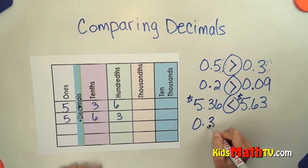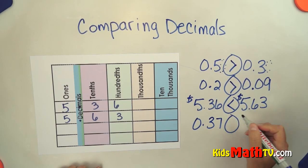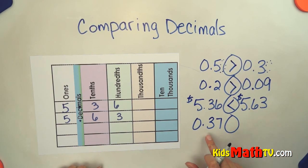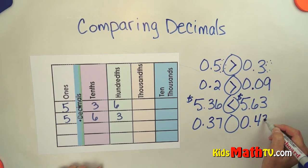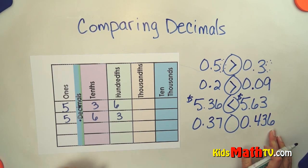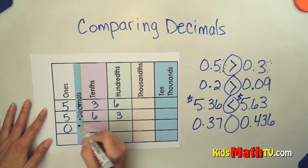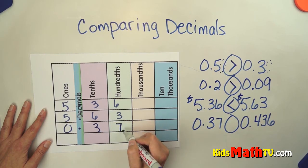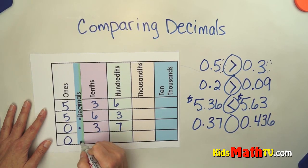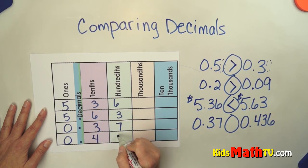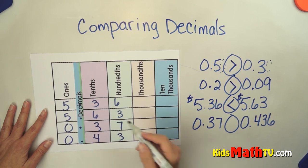Let's try one more. 0.37 compared to 0.436. So we'll put it in here: decimal, 37 in the hundredths place, and 0.436.